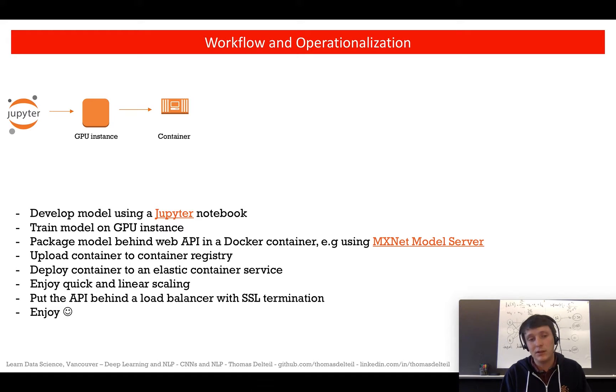Once your network is ready, you can containerize it. With MXNet, you can use MXNet Model Server, which provides ready-to-go Docker container solutions to deploy your model behind a web API. You upload your container to a container registry like Docker Hub, then deploy your container behind an elastic container service.